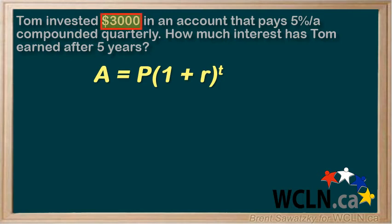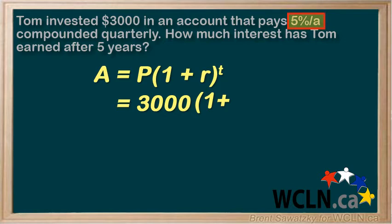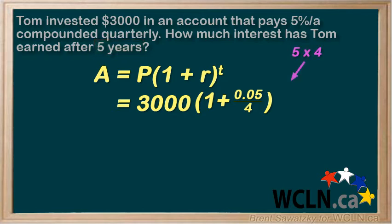Now we notice that our principal is our investment of $3,000. And we put 1 plus our interest rate — using this formula, we know that we have to have our interest rate as interest per compounding period. Now we're compounded quarterly, so our interest rate per quarter would be 5%, or 0.05 over 4. And we raise this to the power of how many compounding periods: 5 years and 4 compounds per year, so 5 times 4 is 20.